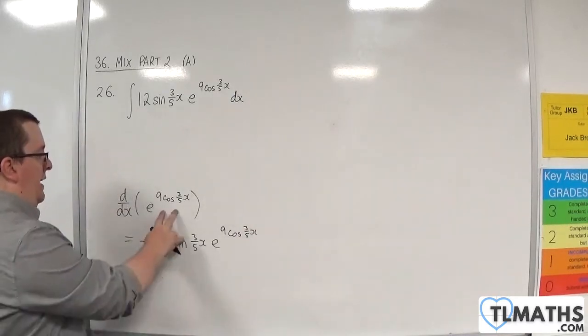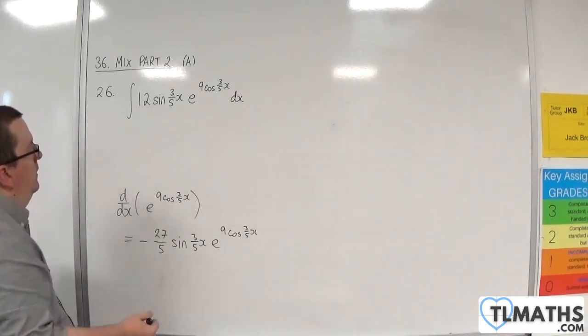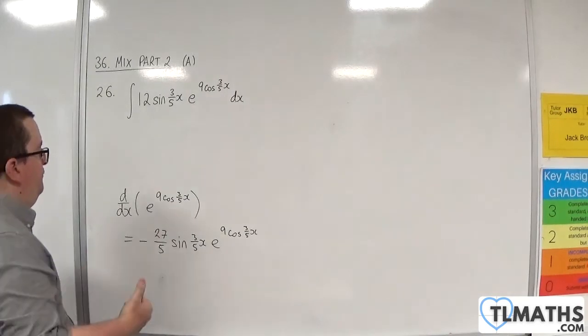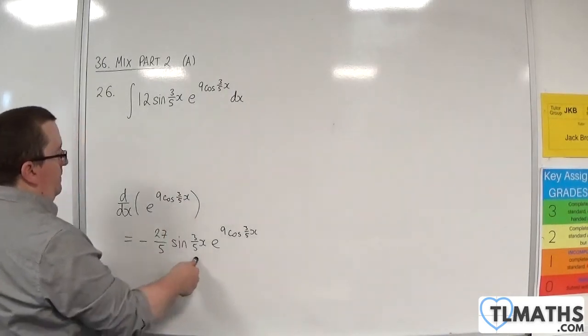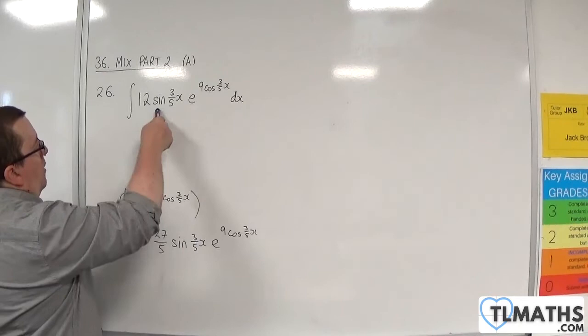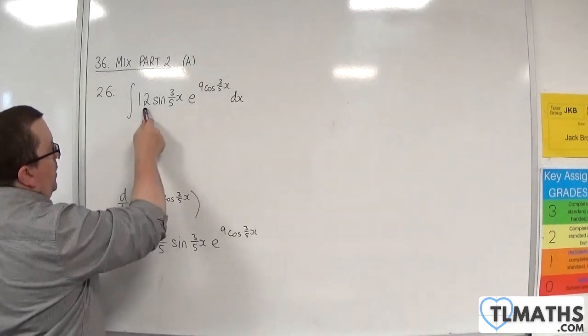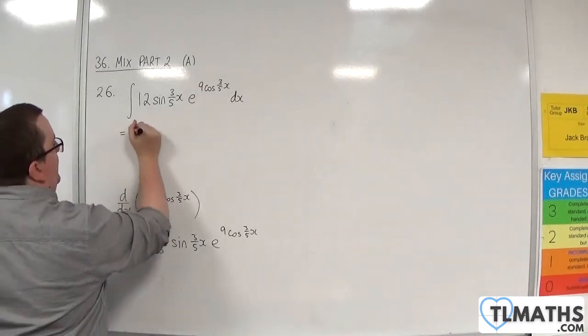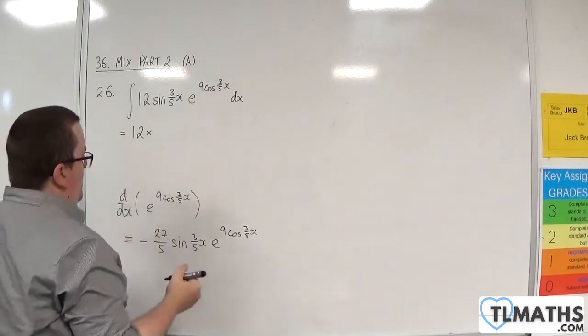So that differentiates to this. Now, if that differentiates to that, then what must this integrate to? Now, we've got this 12 out the front. I'm going to leave that as a multiplier.